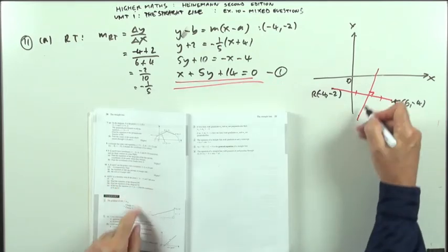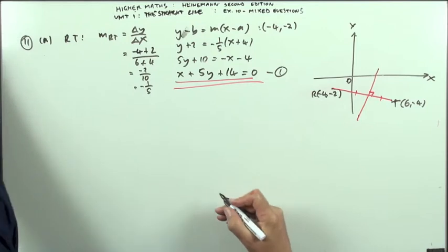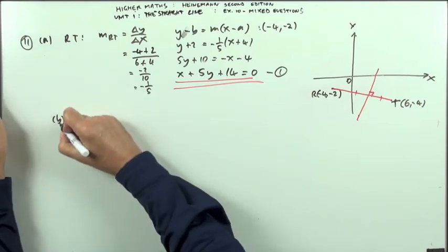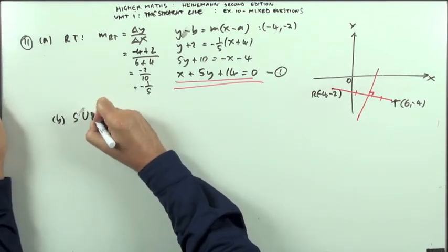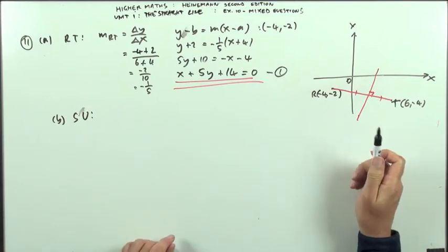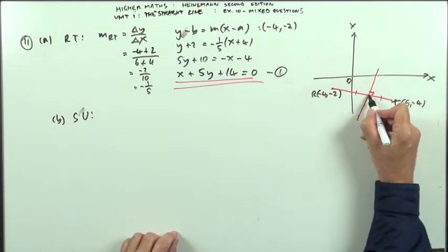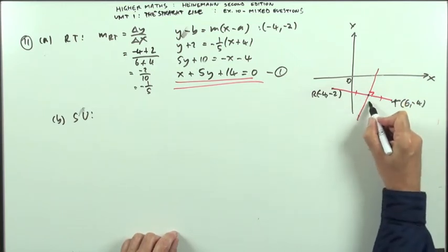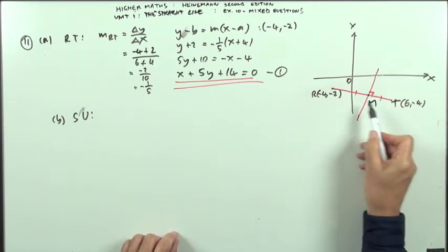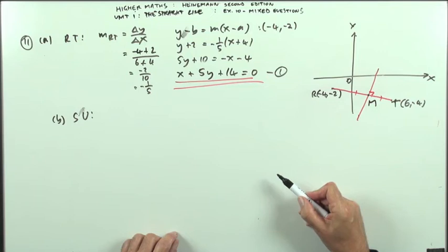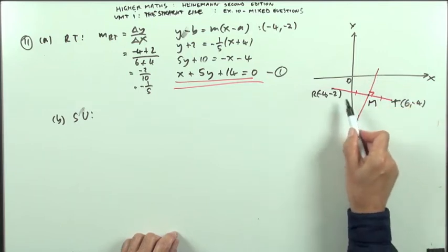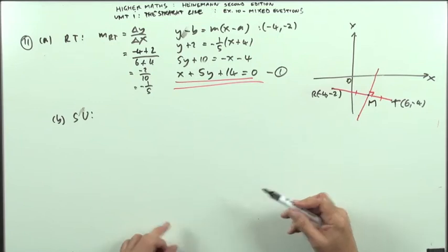B, find the equation of the diagonal SU. So for part B, I'm looking for SU. Well, that means I need two things. I need a point on and its gradient. It looks like I've got nothing so far. Well, I know the diagonals bisect each other, so I'll just call that point M. So I could find the midpoint of those two. And then I know it's perpendicular, so I can use the fact that they should multiply to get negative 1.